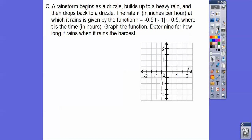All right, rainstorm begins as a drizzle, builds up to a heavy rain, and then drops back to a drizzle. The rate r in inches, so it looks like here's r right here, so this is going to be our y-axis. So remember our equation is y equals a times the absolute value of x minus h, and then plus the k right here. So this y is r. So it's given by this function r equals, and then this is negative 1/2, basically, so down 1 over 2, and then times t minus 1, well, t is our x, so this is our x minus h right there, and then plus this k right there.